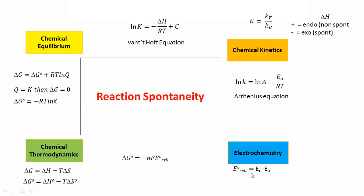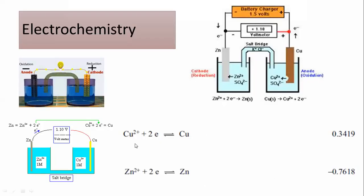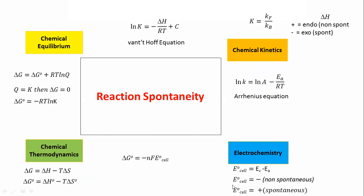To calculate cell potential, it is simple: E-cell equals the half-cell potential at the cathode minus the half-cell potential at the anode. For example, 0.34 minus (−0.76) gives 0.34 + 0.76 = 1.10 volts. To conclude: cell potential minus means non-spontaneous; cell potential positive means spontaneous. This is the simple formula to calculate cell potential — just subtract the potential at the anode from the potential at the cathode.